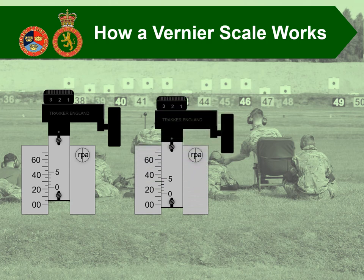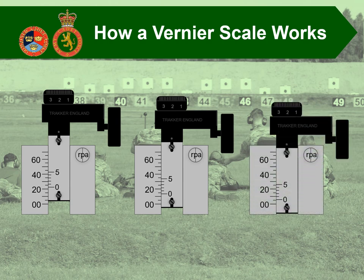For example 2, the 0 sits between the 10 and the 15. Counting the small graduations on the moving plate — 1, 2, 3, 4 — that makes 14 minutes of elevation. And for the final example, the 0 is sitting between 5 and 10, and it's the first line on the small graduations that lines up. So that makes 6 minutes of elevation overall.